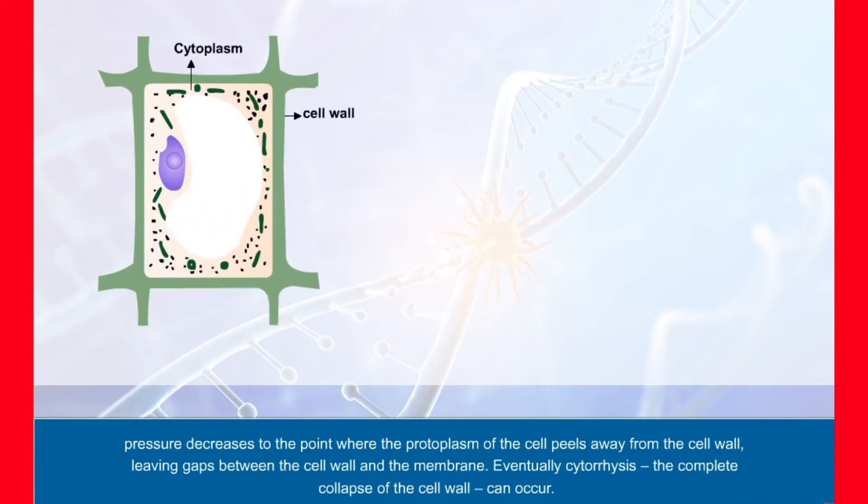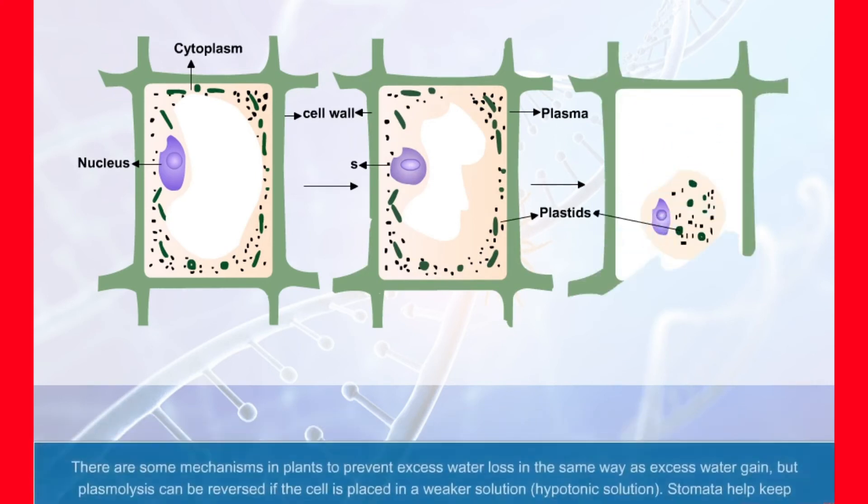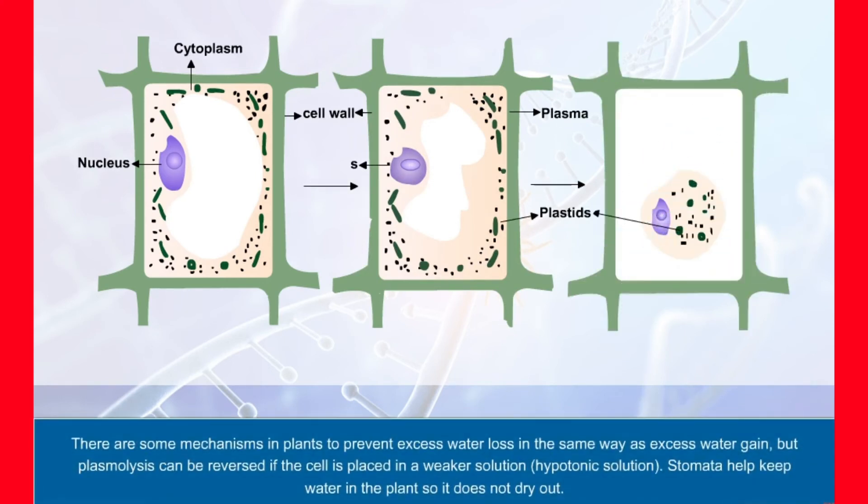Eventually, cytorrhysis, the complete collapse of the cell wall, can occur. There are some mechanisms in plants to prevent excess water loss in the same way as excess water gain.